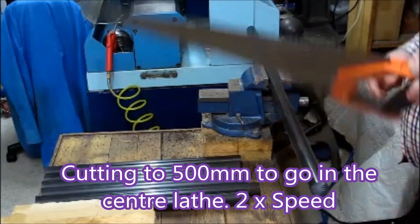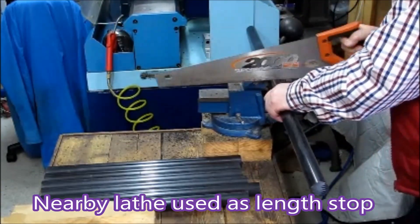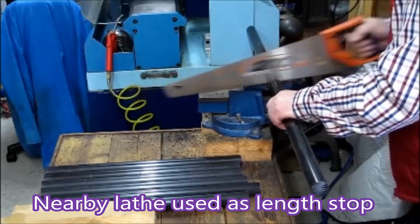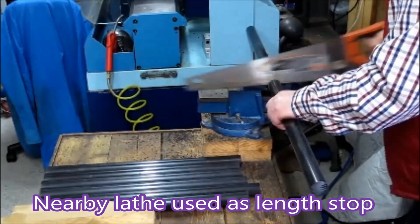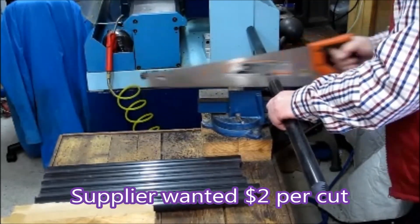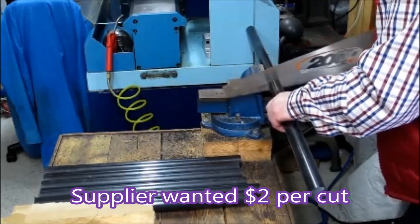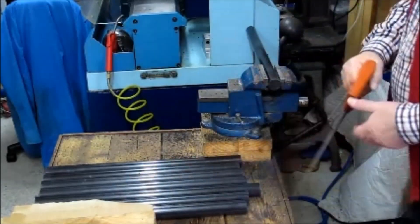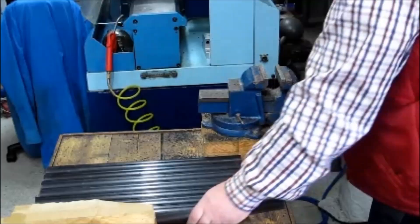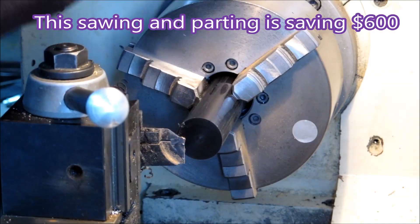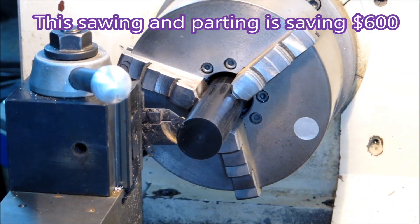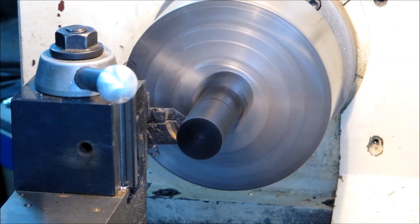I had to chop it in half using a wood saw because the meter is too long to go in my center lathe. The suppliers wanted two dollars a cut. 300 parts, that would have made six hundred dollars - that was never going to work. So I'm parting them off in the center lathe at 1500 RPM.